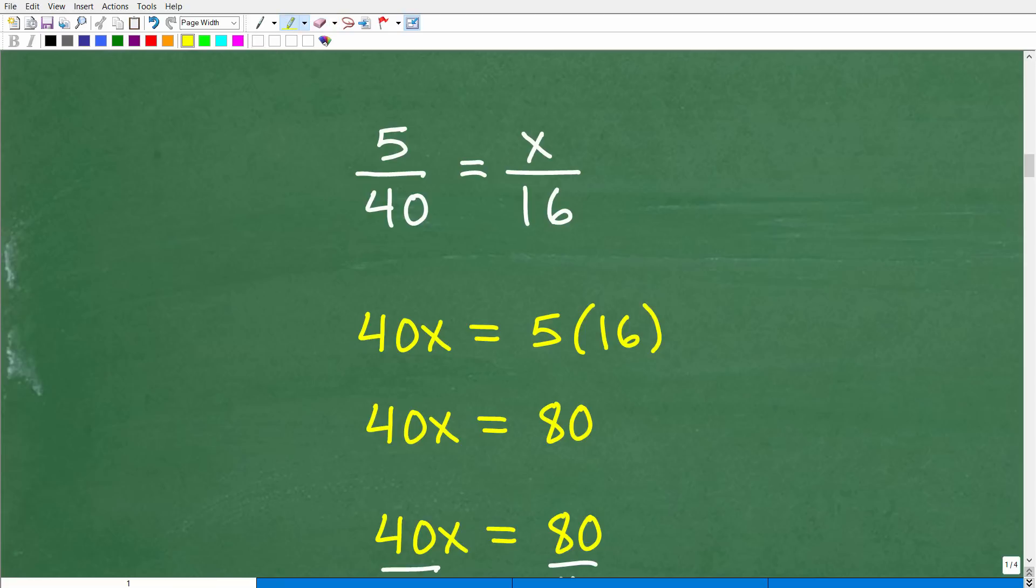When you're dealing with proportions, you want to be thinking of that cross product. Now, there are a couple different other ways you can think about solving proportion problems. But the cross product, by far, is the most common. And there's another kind of term that goes with it, the means equal the extremes. You don't need to worry about that. As long as you get this basic idea of the cross product down, you'll be good to go when it comes to proportions. So let's go ahead and use that to solve for this variable x.